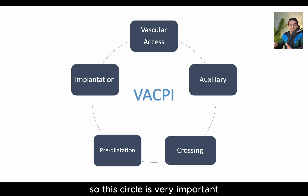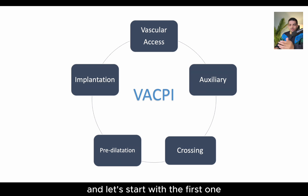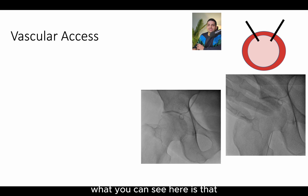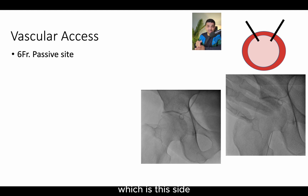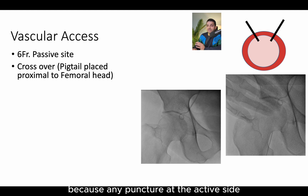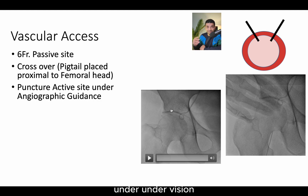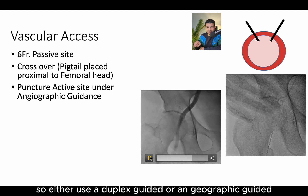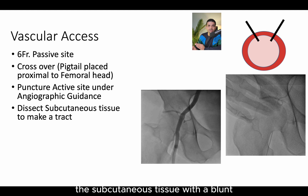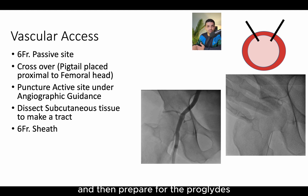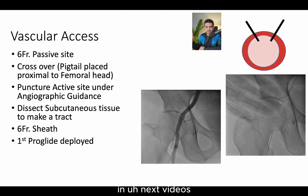This circle is very important. Each step follows the other, but you have to complete the whole circle. Starting with the first one — the vascular axis. In the vascular axis, you get into a six French puncture for the passive site, which is the site opposite to the one where you're going to introduce the valve from. Then you do the crossing, because any puncture at the active site has to be under vision — either duplex-guided or angiography-guided. Then you dissect the subcutaneous tissue with a blunt straight mosquito, put your six French sheath, and prepare for the proglides. In the next videos, we'll discuss more on proglides, vascular axis, and large-bore cannulas.